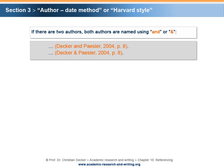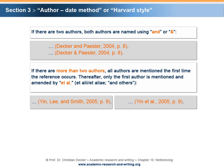If the reference contains two authors' names, both authors are named and connected by AND or the ampersand. If there are more than two authors, all authors are mentioned the first time the reference occurs. Thereafter, only the first author is mentioned and amended by et al.